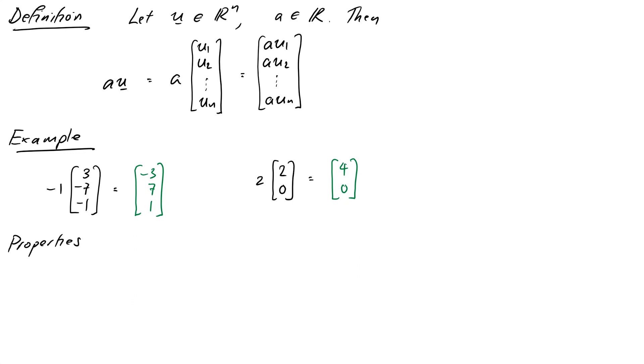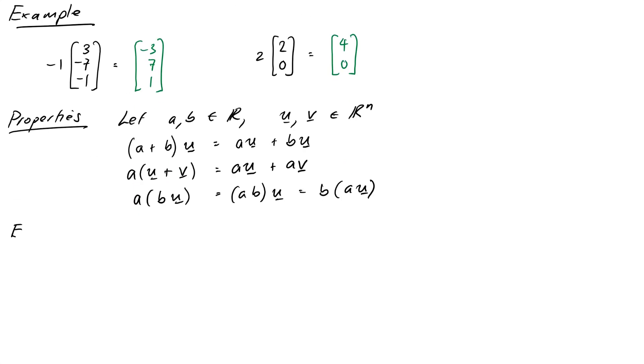So again, we can write down a list of useful properties that scalar multiplication has to obey. So we'll say let a and b be scalars and let u and v be vectors. Then the following are true: (a plus b) times the vector u is equal to au plus bu. Or a times the vector (u plus v) is equal to au plus av. We can expand parentheses both ways. Finally, if I take a times (b times u), that's equal to (a times b) times u, which is equal to b times (au). These properties essentially just say that we can do things like expanding parentheses with scalar multiplication in the same way that we're used to doing with regular numbers.